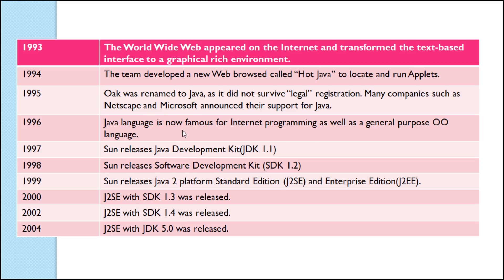In 1997, a Java Development Kit was released. In 1998, J2SE and Enterprise Edition J2EE were released. In 2000, J2SE with SDK 1.3 was released. In 2002, J2SE with SDK 1.4 was released. In 2004, J2SE with SDK 5.0 was released. J2SE stands for Java 2 Platform Standard Edition.